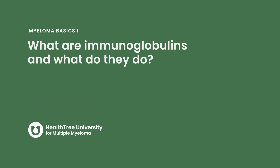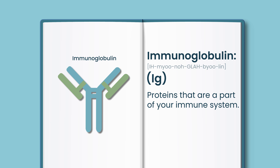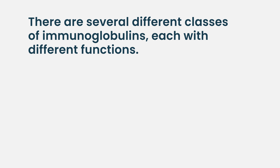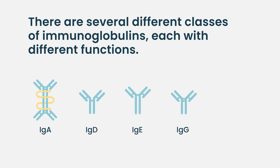What are immunoglobulins and what do they do? Immunoglobulins are proteins that are a normal part of the immune system. The term immunoglobulin is usually abbreviated as a capital I and a small g. There are multiple different classes of immunoglobulins designated by different letters of the alphabet: IgA, IgD, IgE, IgG, and IgM. Each of them has a slightly different function in helping the body have different types of immune responses.